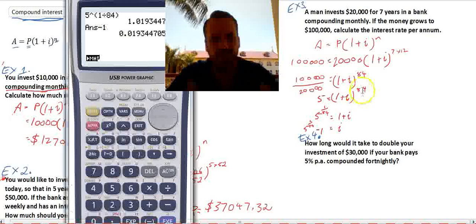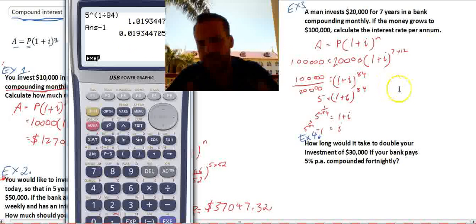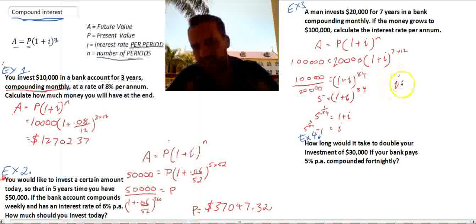Let's see what we end up with. Okay. Now, we can see that we get an I value of 0.0193.